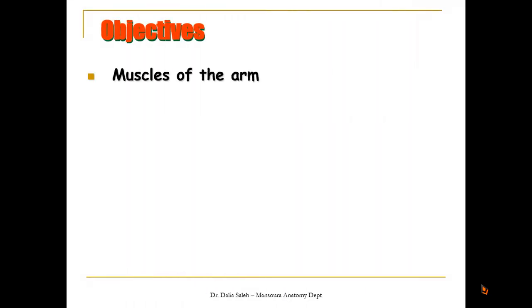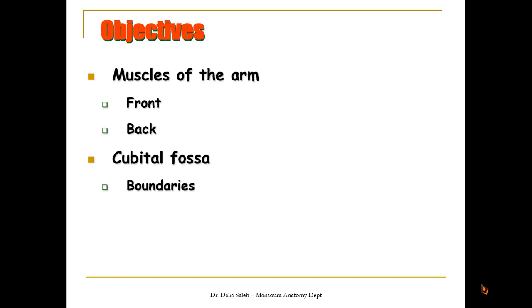In this presentation I'm going to cover the following objectives. First I will talk about the muscles of the upper limb, both at the front and the back, and then we will talk about the cubital fossa regarding its boundaries and contents.